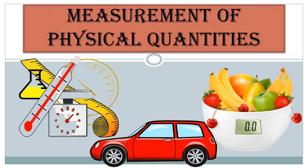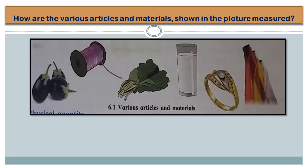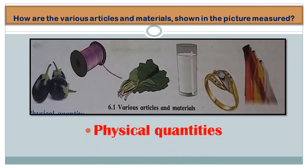Welcome everyone. Today we shall study a chapter from standard 7: Measurement of Physical Quantities. This is part 1 of this lesson. Some objects are given to us — various articles and materials. You can observe here there are vegetables, thread, a glass of milk, a ring, and cloths. We shall measure these articles by some physical quantity.